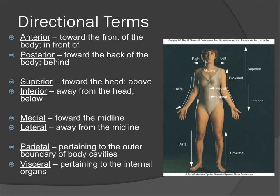Medial means toward the midline of the body — for example, the heart is medial to the arms because it's toward the midline. Lateral means away from the midline — the arms would be lateral to the heart. Parietal pertains to the outer boundary of a body cavity, belonging to the walls of organs. Visceral pertains to the internal organs themselves. On all exams, directional terms will be tested based on examples, not direct definitions.